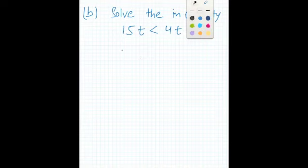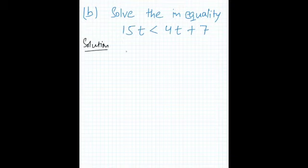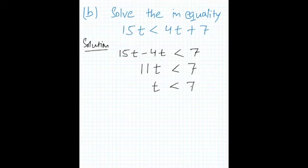Here in this question, 15t will remain the same. When 4t comes to the left hand side, it will become minus 4t. The inequality sign should be like that, and plus 7 remains as plus 7. 15t minus 4t will give you 11t, and 7 will be still the same. By cross multiply method again, t will be 7 over 11, and that's your answer.